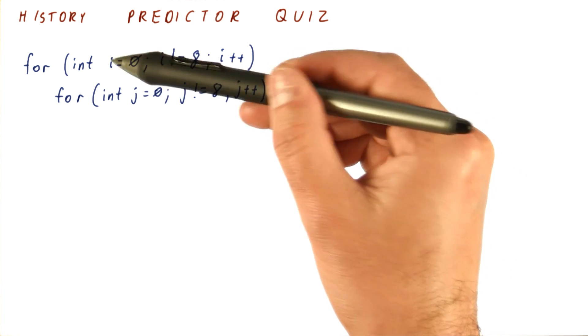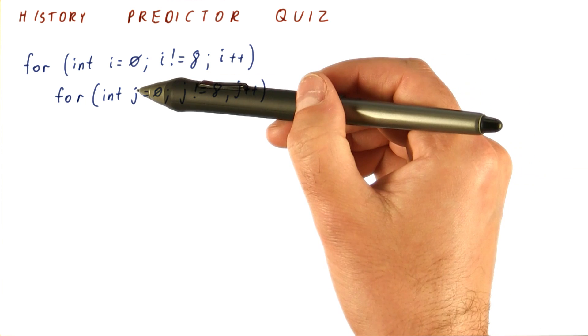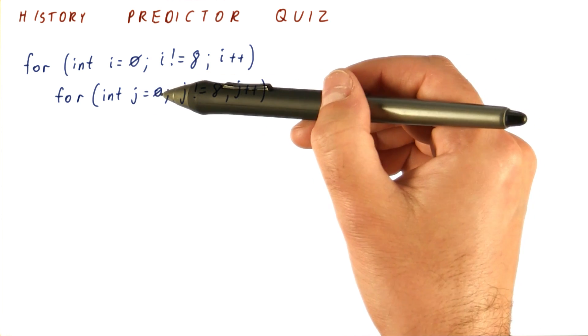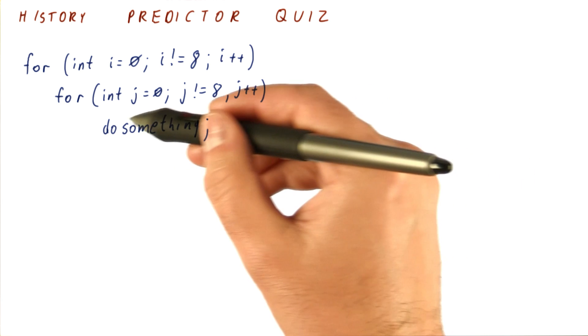One i goes from 0 through 7. And then within it we have a nested loop of j goes from 0 through 7. Let's say we do something that doesn't have much branching behavior in it.